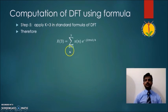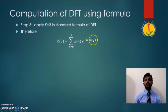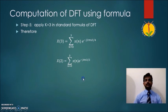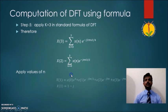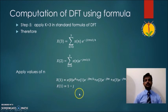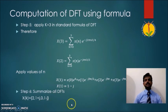For the last value k=3: X(3) = summation from n=0 to N-1 of X(n) e^(-j2πn·3/4). After simplification and applying the sequence values n=0 to 3 with X(0)=1, X(1)=0, X(2)=0, X(3)=1, we obtain X(3). Summarizing all DFT values gives the complete DFT of the given sequence — this is the technique for determining the DFT of a sequence using the standard formula.